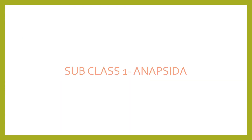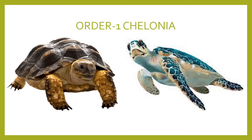Subclass Anapsida is a primitive reptile with a solid skull roof without temporal openings. Under Anapsida, the first order is Kironia. Body is broad and oval with two pairs of webbed, clawed, or pad-like limbs. Body is covered by dorsal carapace and ventral plastron. Jaws are with horny sheath and teeth are absent.